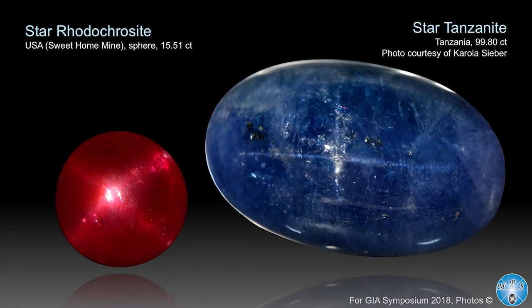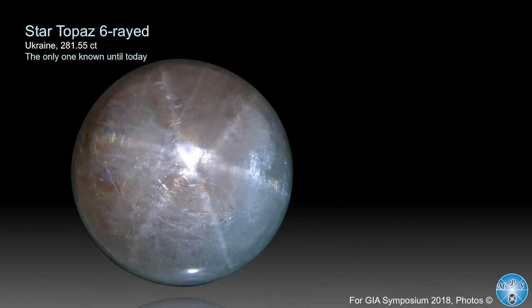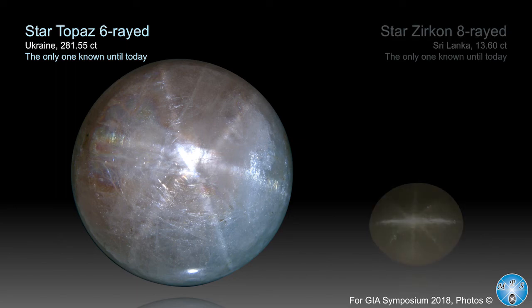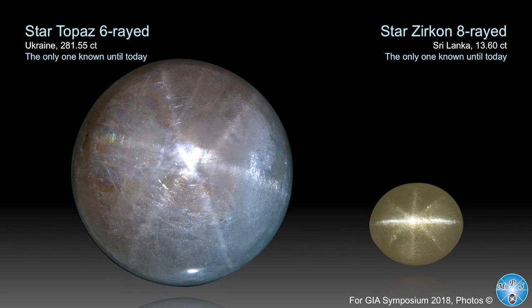Star tanzanite: if you talk about tanzanite dealing companies, they have millions of dollars of stock in cut tanzanite and normally have never seen a star tanzanite. This one was examined by the SSEF in Switzerland, and even tanzanite can show some star phenomena. Topaz: six-rayed, very rare, from Ukraine — a big stone. And zircon: an eight-rayed star, though some stones always have a stronger ray in the direction of the c-axis than the other rays crossing it.